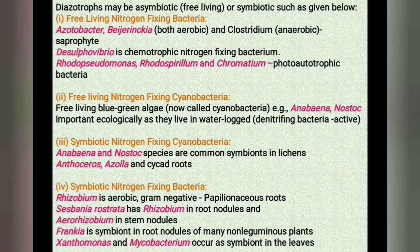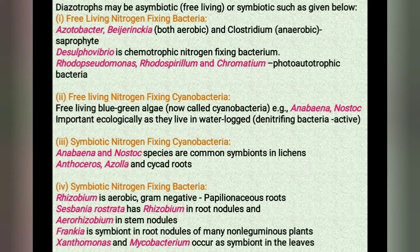The third type is the symbiotic nitrogen-fixing cyanobacteria. Anabaena and Nostoc species are common symbionts in lichens. Anthoceros and Azolla are found in cycad roots.